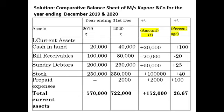The next item is bills receivable. In 2019 it was 1 lakh; in 2020 the amount is 80,000. Comparing, it has reduced by 20,000, so we write minus 20,000. In terms of percentage: 20,000 upon 1 lakh multiplied by 100 gives 20 percent decrease in bills receivable. Next, sundry debtors increased by 50,000 — a 25 percent increase. Then stock went from 2 lakh 50 to 3 lakh 50, an increase of 1 lakh, which is a 40 percent increase.